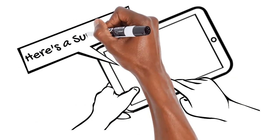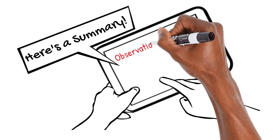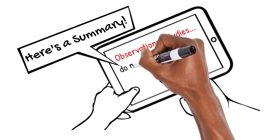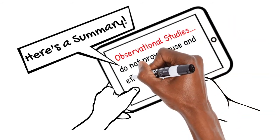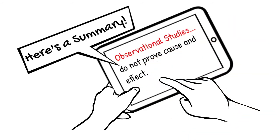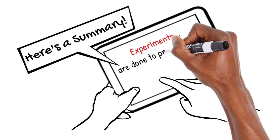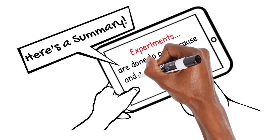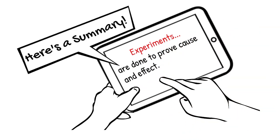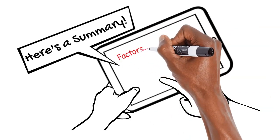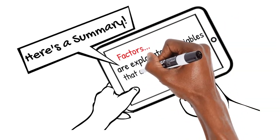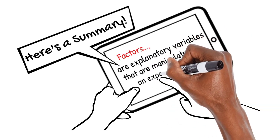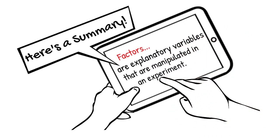Here's a summary of what we've learned. Observational studies do not prove cause and effect. Experiments are done to prove cause and effect. Factors are explanatory variables that are manipulated in an experiment to help us prove cause and effect.